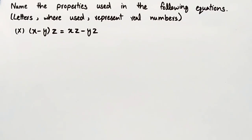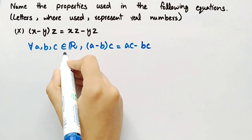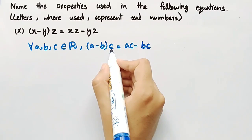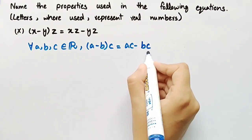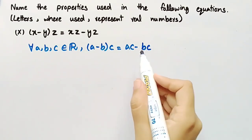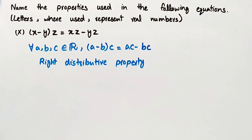Equation number 10 is (X minus Y) multiplied by Z is equal to XZ minus YZ. By the definition of the right distributive property, for all A, B, C belonging to the set of real numbers, (A minus B) multiplied by C is equal to AC minus BC. The property used in this equation is the right distributive property.